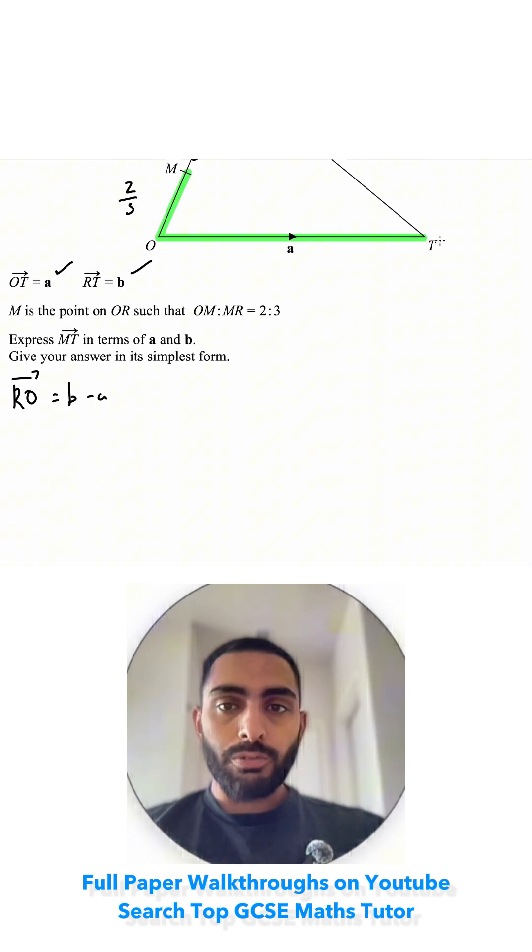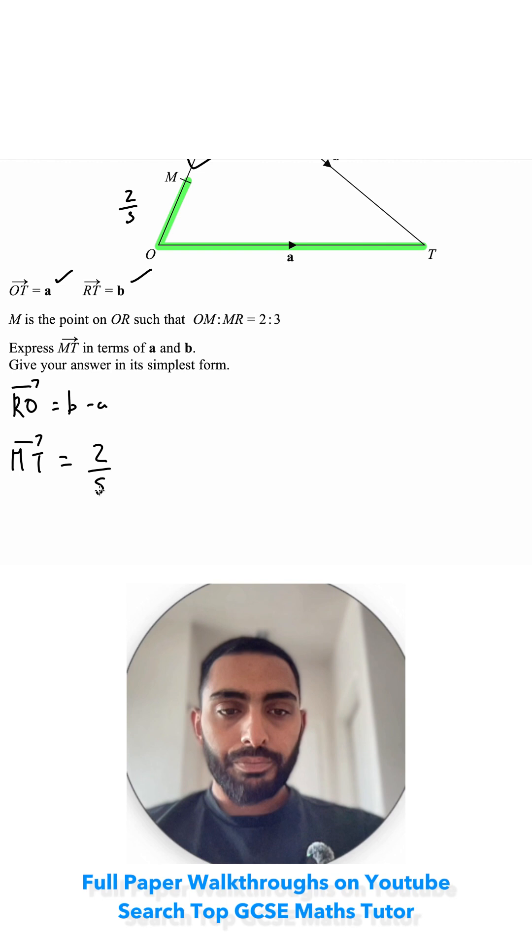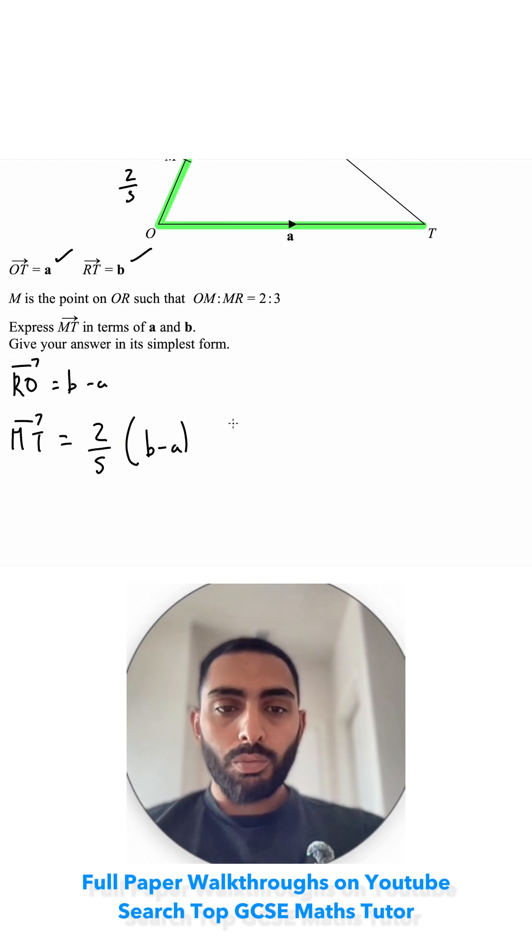So now we're going from M to T. I want 2 fifths of B minus A and then I'm adding one more lot of A.